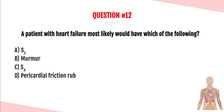Question number twelve. A patient with heart failure most likely would have which of the following: an S3, a murmur, an S4, or a pericardial friction rub? The answer is A. A patient with heart failure will most likely have an S3 heart sound, present because of blood backing up into the left atrium and into the lungs. Think fluid overload with an S3 heart sound.